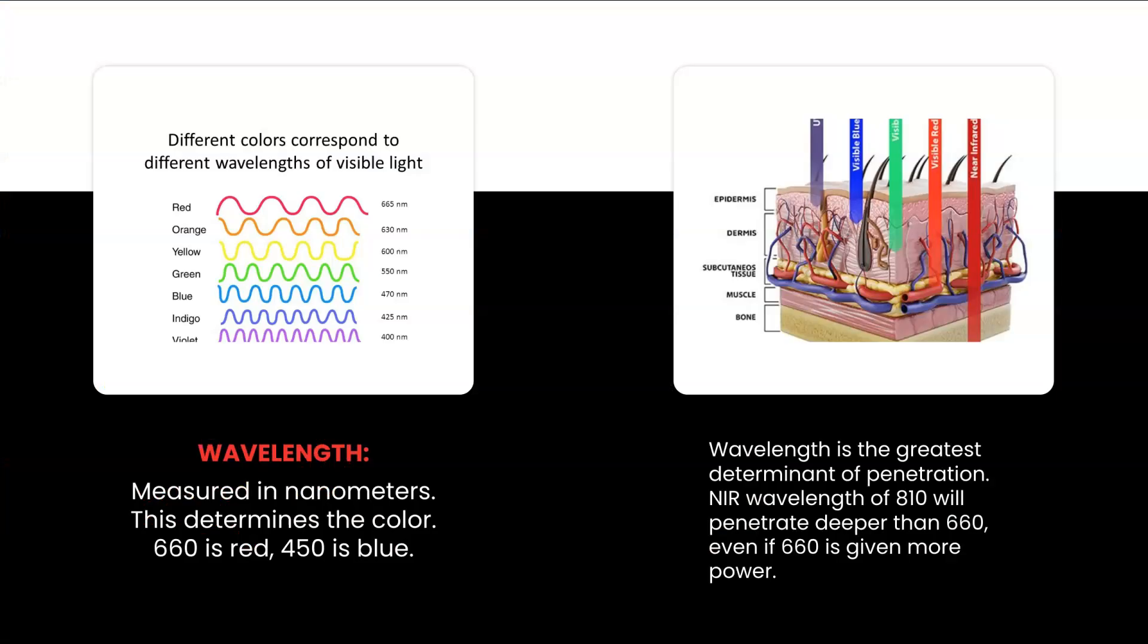Let's first go through some of the more important definitions as these will be commonly heard in the photobiomodulation community. We'll review a few which we've already discussed. Wavelength is measured in nanometers. It determines the color of visible light. 660 nanometers would be red whereas 450 nanometers would be blue. Wavelength is the greatest variable in determining penetration. Near infrared wavelength of 810 will penetrate deeper into the body than 660 even if 660 is given more power and more time.